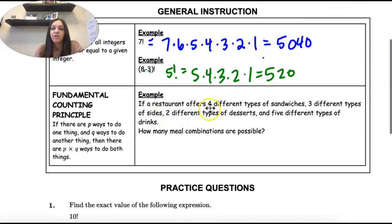So if a restaurant offers 4 types of sandwiches, 3 types of sides, 2 types of desserts, and 5 different drinks, how many combinations are possible?